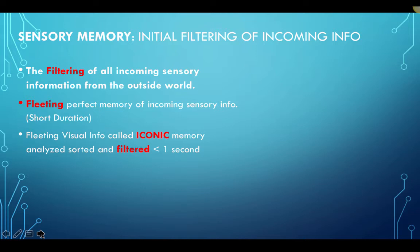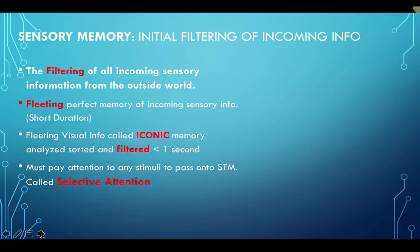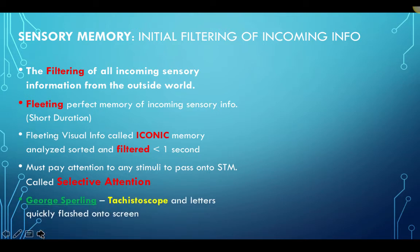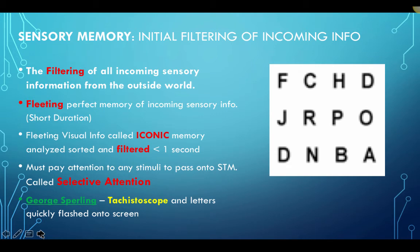Only information we pay attention to gets filtered through into short-term memory. If you want to learn or remember something, you have to pay attention to it. Information that is not attended to is quickly forgotten, especially visual information. George Sperling in the late 1950s proved that our sensory memory exists. He used a machine called a tachistoscope — a kind of turbocharged slide projector — and quickly flashed a series of letters on a screen for less than a second, about a twentieth of a second, then asked subjects to write the letters down. Most people could get three, four, or five letters down, and then the information was lost.